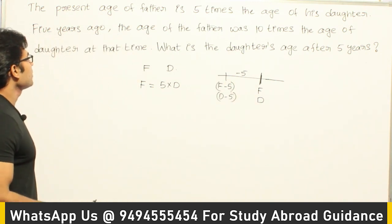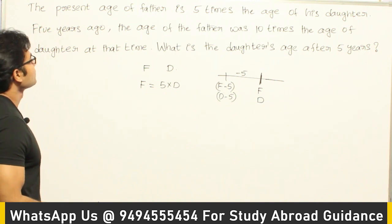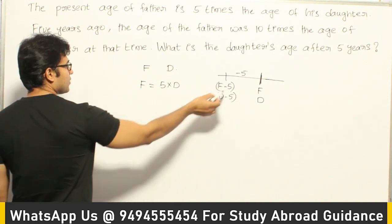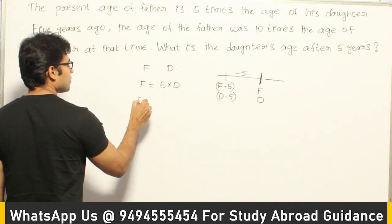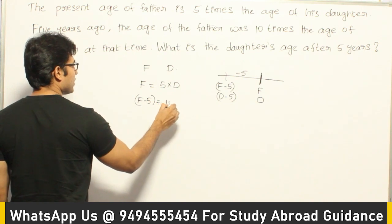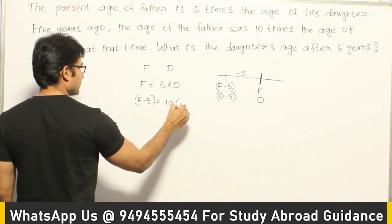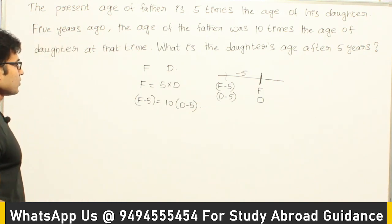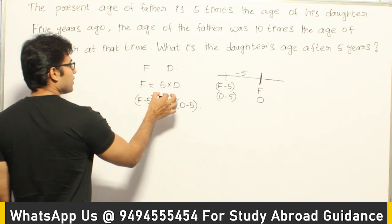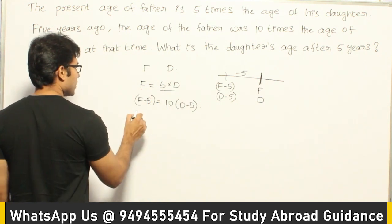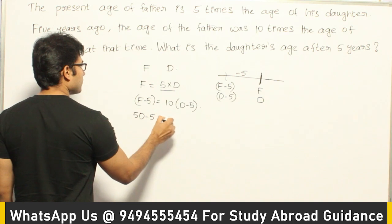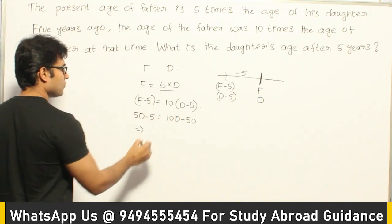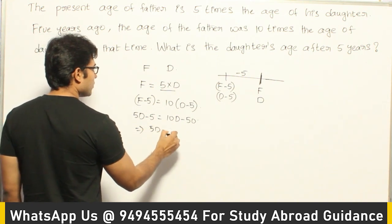5 years ago, the age of father was 10 times the age of daughter at that time. So the equation is: F minus 5 = 10 times (D minus 5). Now from this we can find D. We know F = 5D, so substitute 5D here: 5D minus 5 = 10D minus 50.